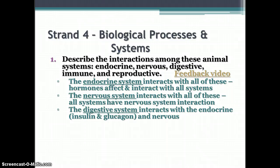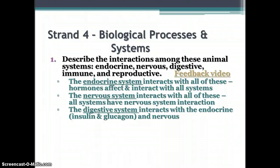The digestive system interacts definitely with the endocrine system because of the insulin and glucagon hormones that affect how glucose is metabolized and stored. And the nervous system, for sure, because the nervous system stimulates the muscle contractions that move the food through the system. The immune system and the reproductive system interact less so, although they both get nutrients from the digestive system.